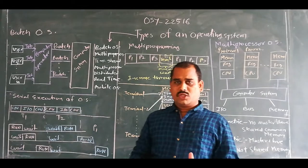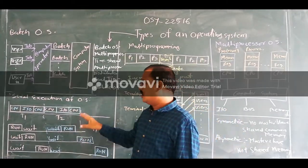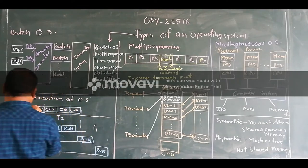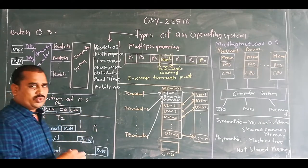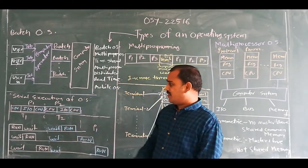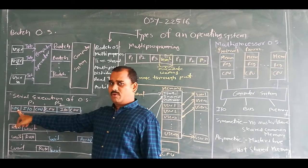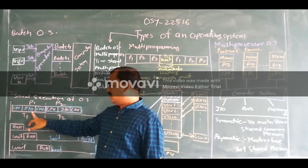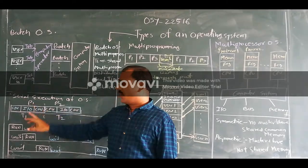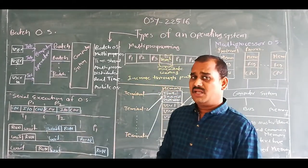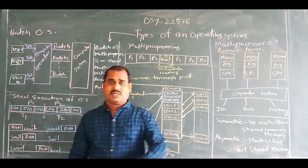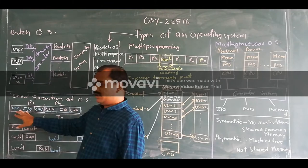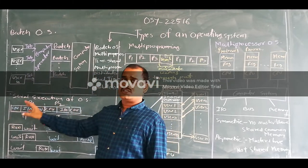For going to the multi-programming operating system, firstly we go through serial execution. Here, the process P1 and the process P2 want to execute. The P1 performs the CPU operation, then P1 performs the I/O operation, same time P2 performs the CPU and I/O operations. Whenever a specific process or P1 process goes for the I/O operation, it utilizes the I/O devices, and in that specific time slot, the CPU will reach an idle state — it means it is in a not-working condition. But the CPU can't be allocated to the other process because it is sequential execution.